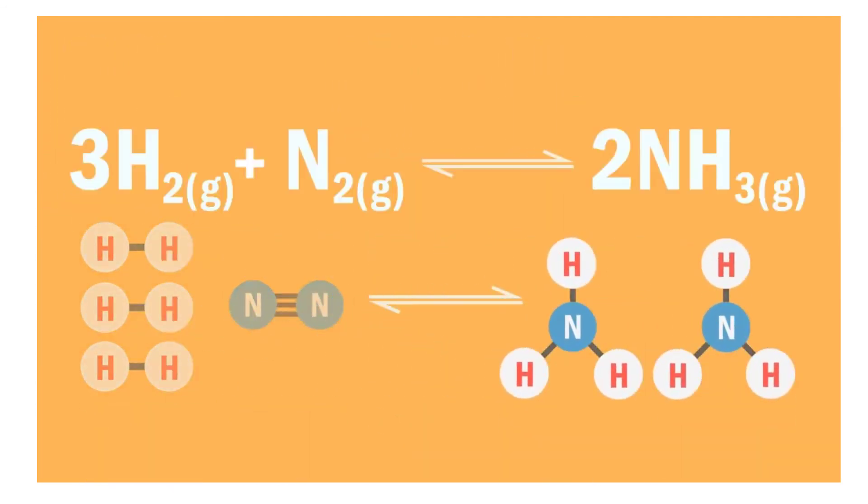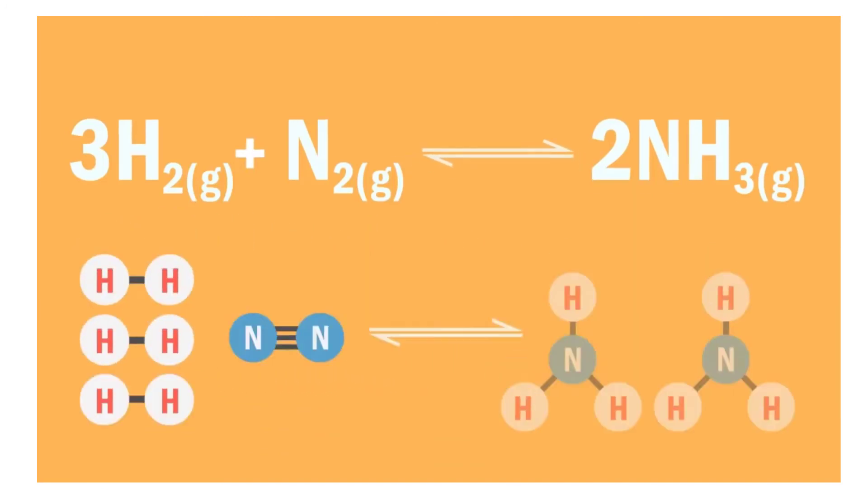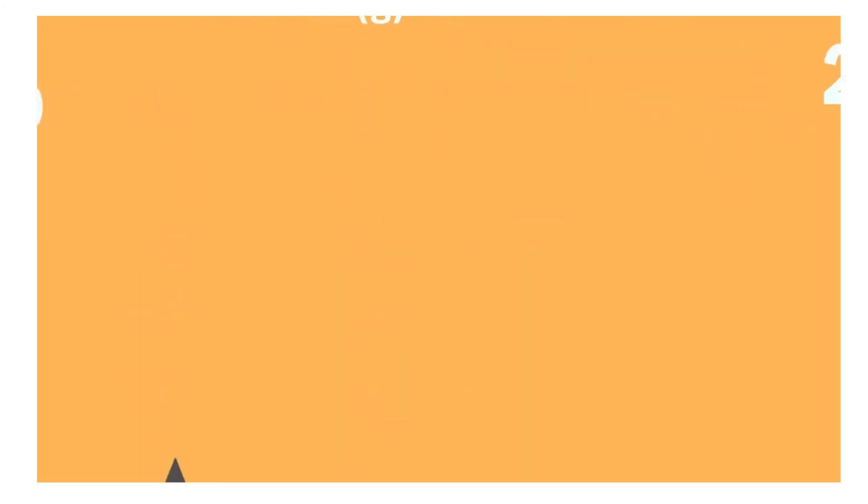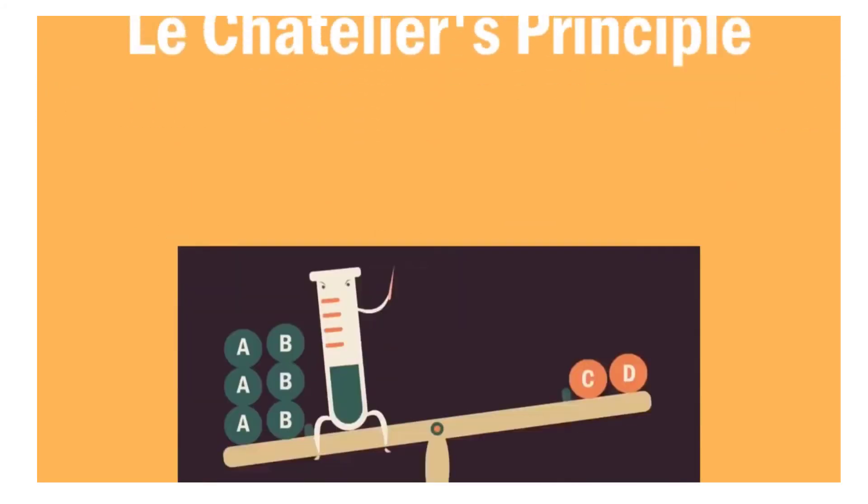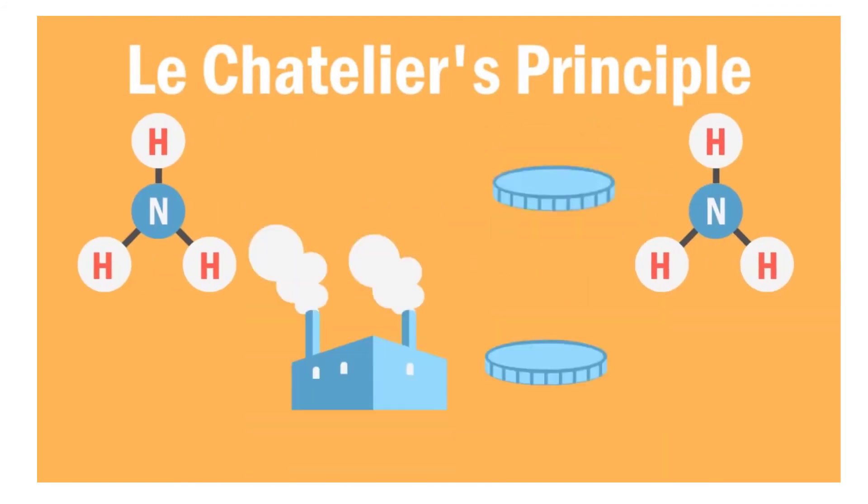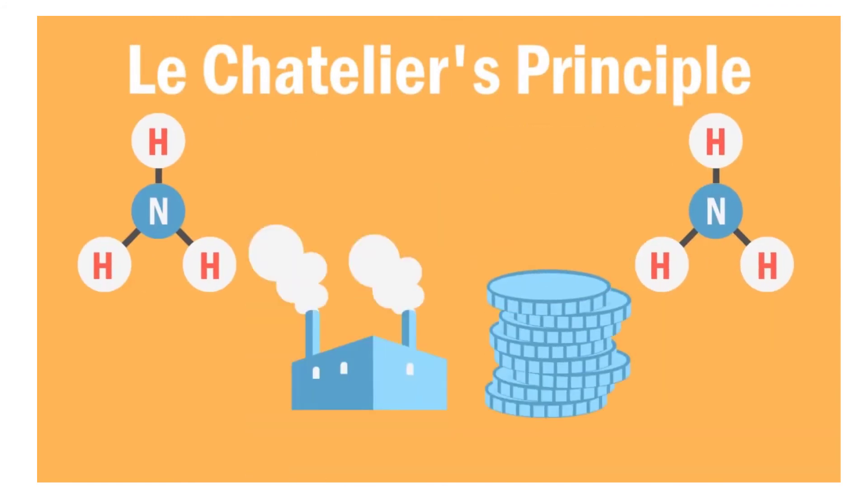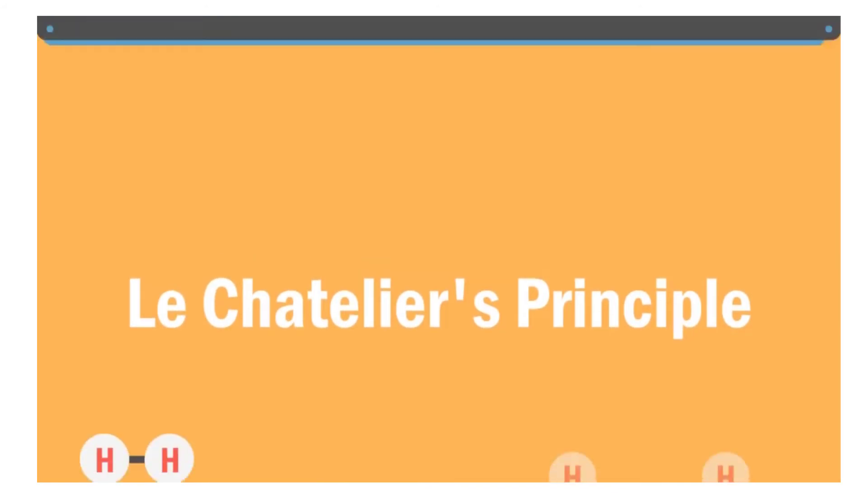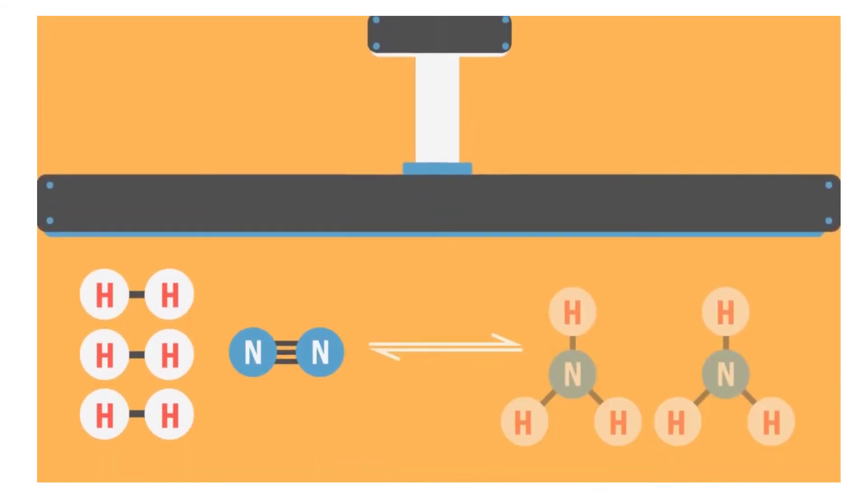Let's revisit this reaction again. Note that this is a reversible reaction and that the forward reaction is exothermic. The Haber process uses Le Chatelier's principle to maximize ammonia production while keeping operating and production costs in mind. Le Chatelier's principle tells us that increasing pressure will favor the side with fewer moles. For our case, the production of ammonia.